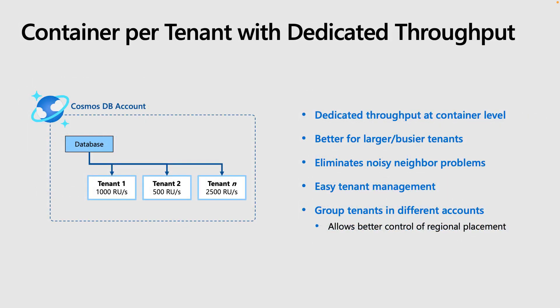The next model is provisioning a dedicated container with dedicated throughput for each tenant. This is better for large or busier tenants that will not require independent control of account-level features. Noisy neighbor problems are eliminated since each tenant will have dedicated throughput. Tenants are easily managed, but you will not see a line item for each tenant on your bill. In this model, you can also group tenants in different accounts based on region to better control which regions they're accessing the database from.